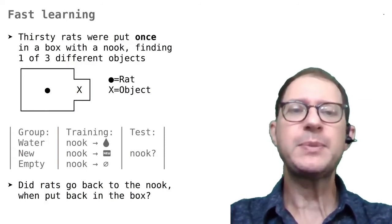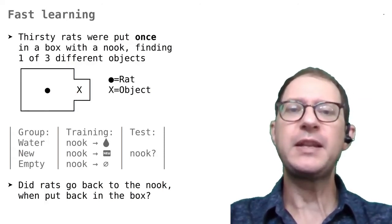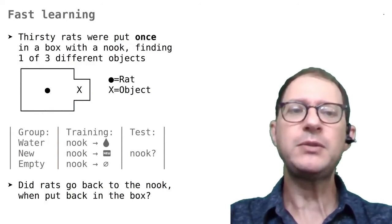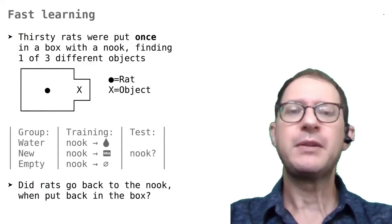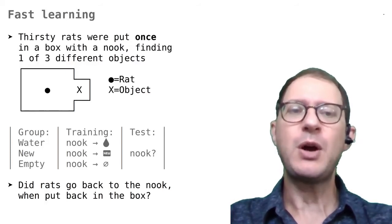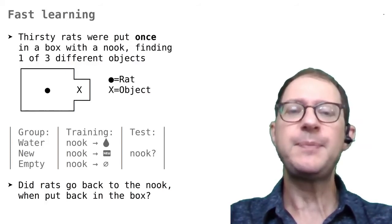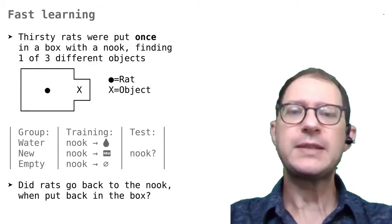There were three experimental groups, each finding a different thing in the nook. Rats in the water group found water, rats in the new group found a new object, a small steel cylinder, and rats in the empty group found nothing. All rats spent at most 15 seconds in the nook, and then they were removed, so they really had limited time to learn what was there.